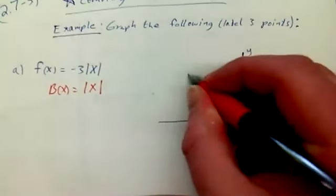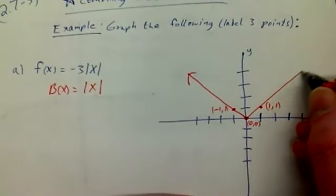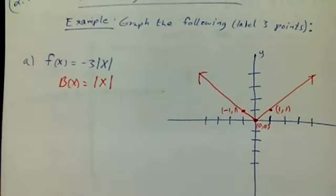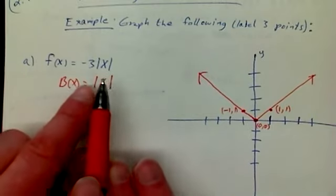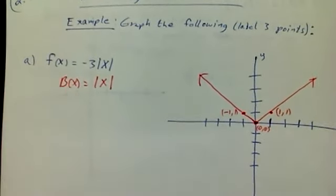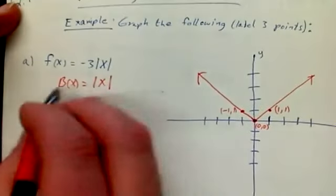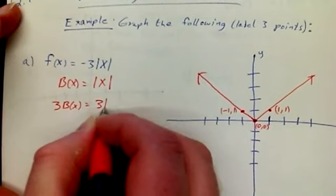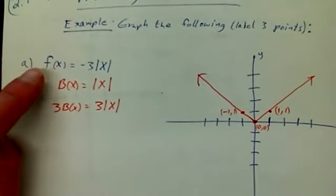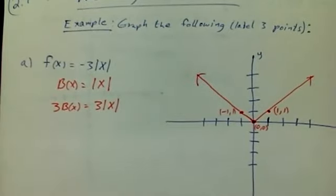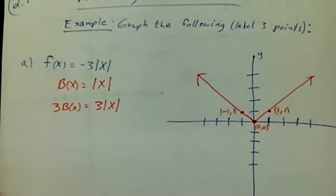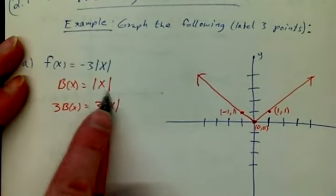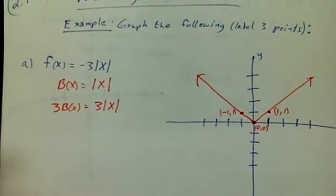What I'm going to do is take this guy and transform him. So to start getting to this next one, what I want to do with these transformations is start with the base function and work my way out. So the first thing I notice is I could get 3 times b of x, and that's 3 times the absolute value of x. Notice I'm not quite to f of x, but I'm getting there, so I'm just working my way out. And I got to ask myself, what is that doing? What is that 3 doing?